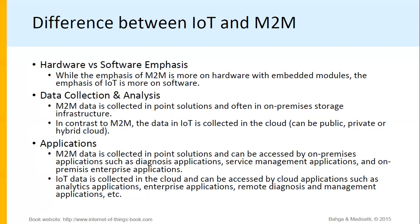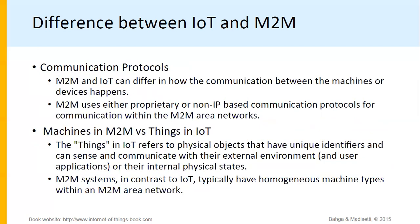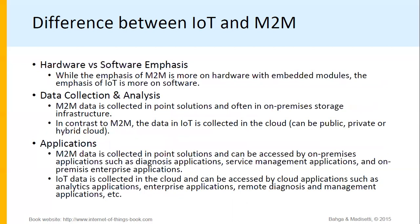To summarize the differences between IoT and M2M: M2M uses non-IP based communication protocols while IoT uses IP-based communication protocols. Things in IoT are physical objects; M2M has homogeneous machine types. M2M has more emphasis on hardware with embedded modules, while IoT is more on software. Data in M2M is collected in point solutions on-premises, while in IoT data is collected in the cloud, which can be public, private, or hybrid.